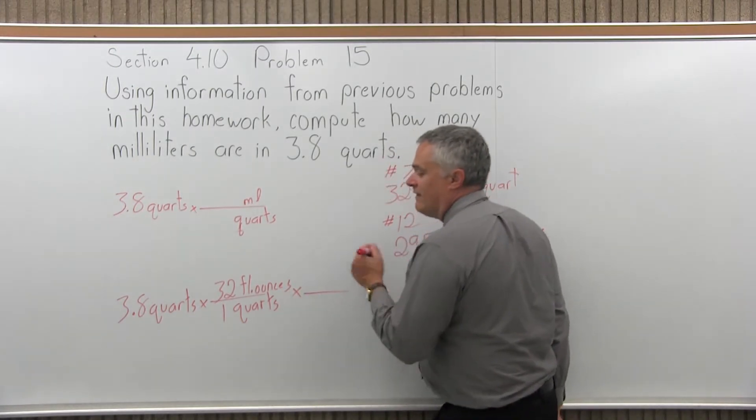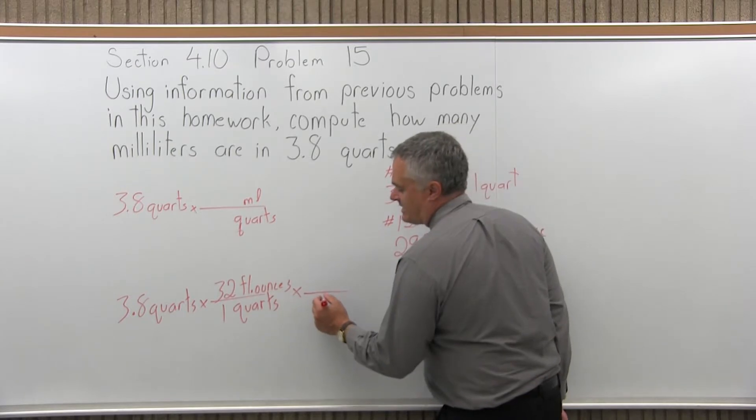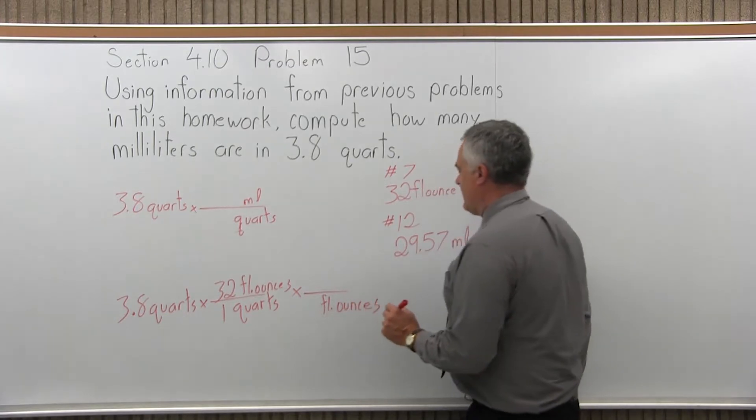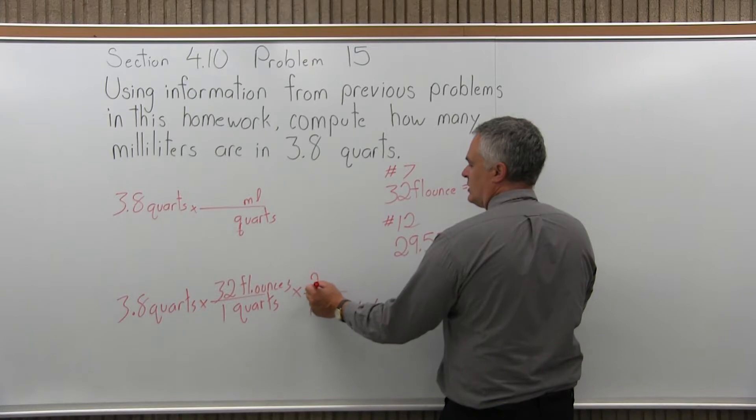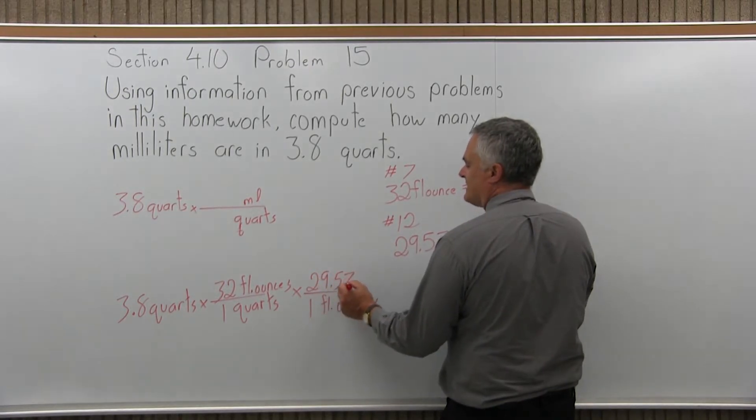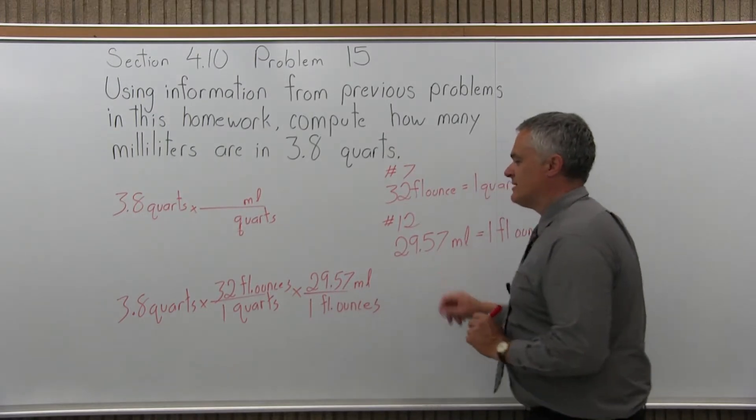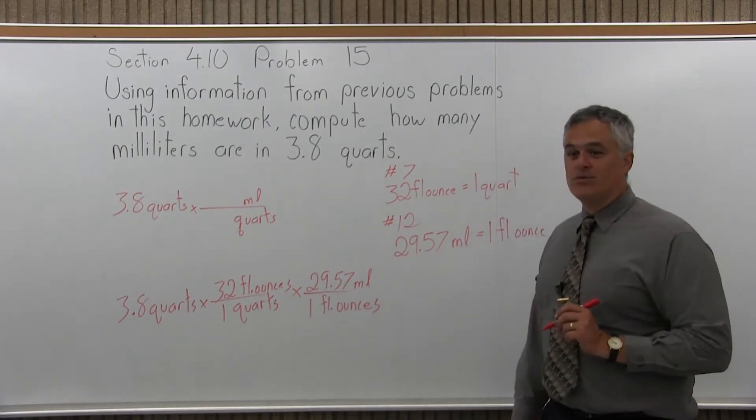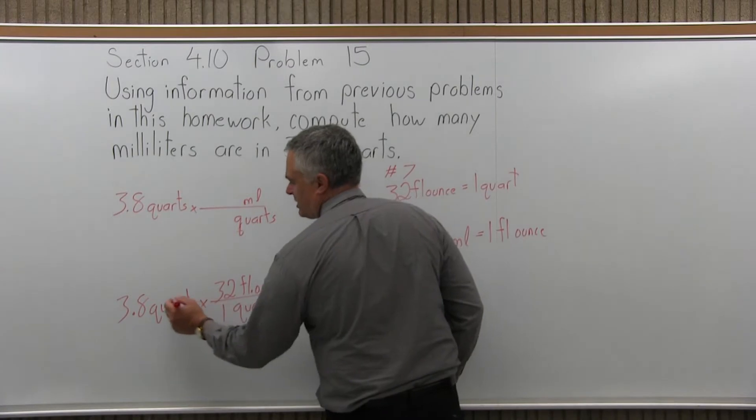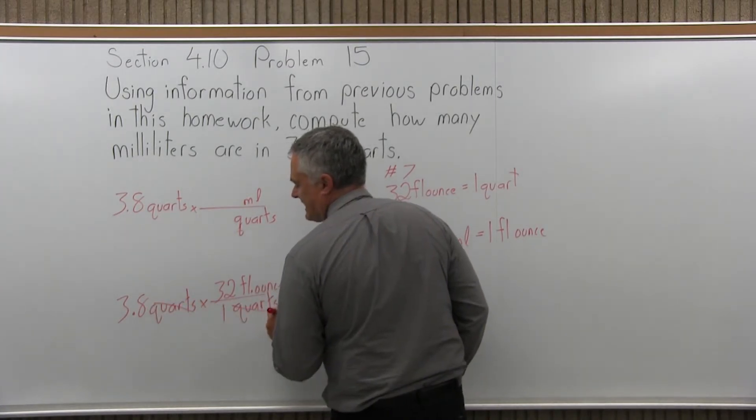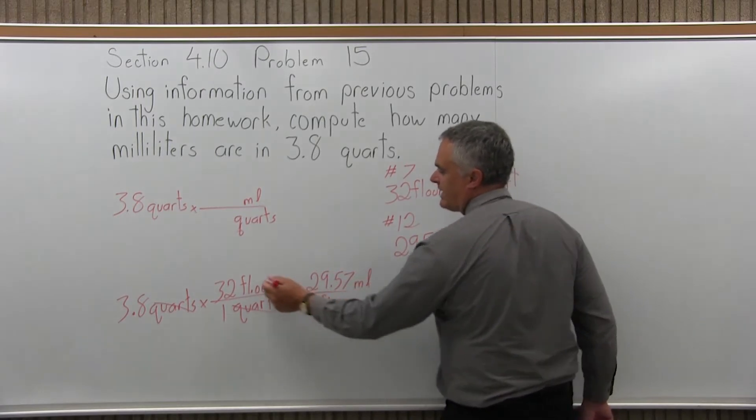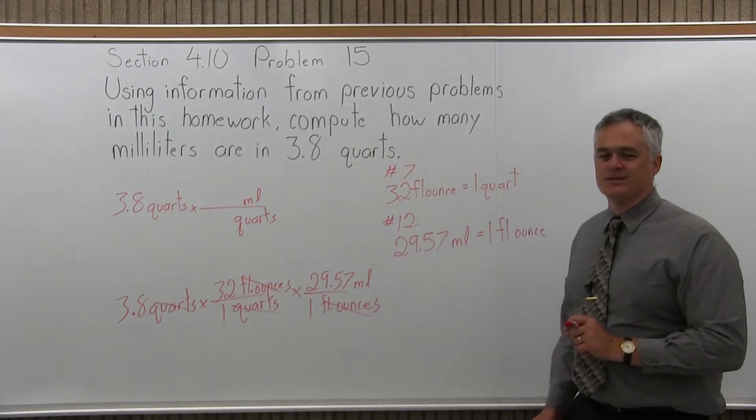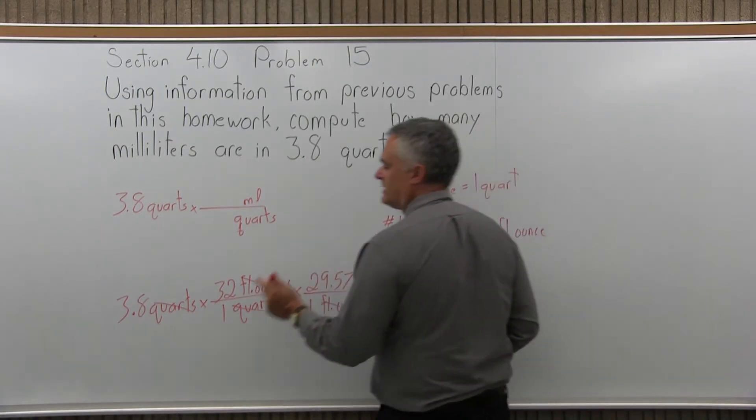So now when I do that, my new unit is going to be fluid ounces, which is not what I want. I want it to be milliliters. But again, I don't have a direct conversion where I can do only one multiplication. I'll just multiply again. And this time I'll use a fraction that has fluid ounces in the denominator. And if I do that, one fluid ounce is equivalent to 29.57 milliliters. So now when I multiply, that first multiplication will make the quarts cancel and I'll be in fluid ounces. And then as I multiply the next one, fluid ounces will cancel and I'll be in milliliters, which is what the question asked me to do.